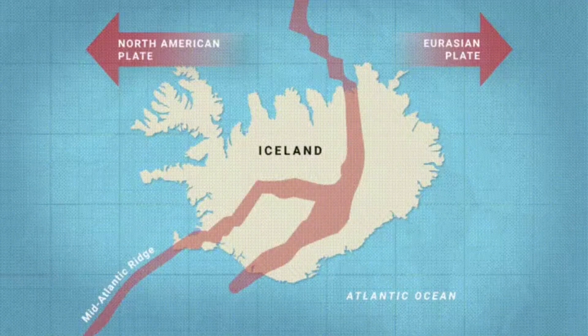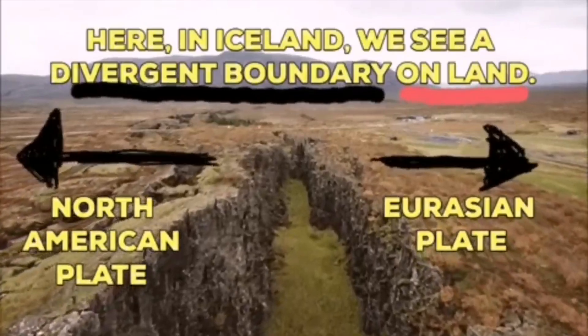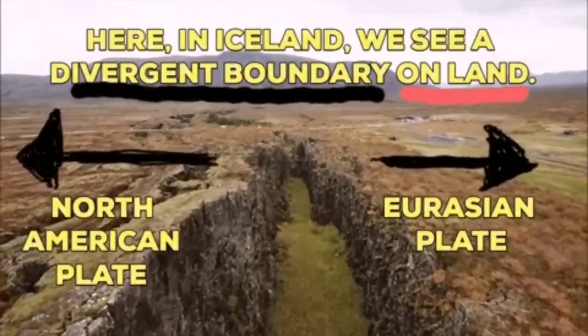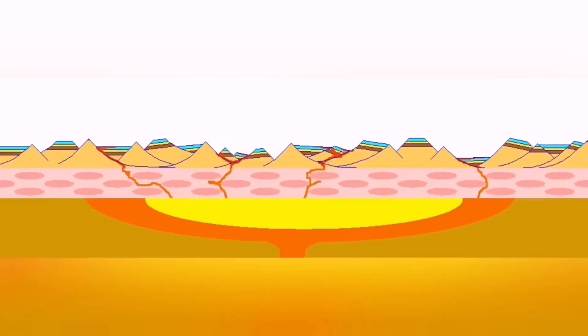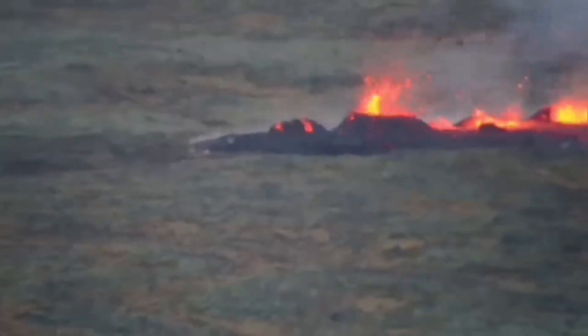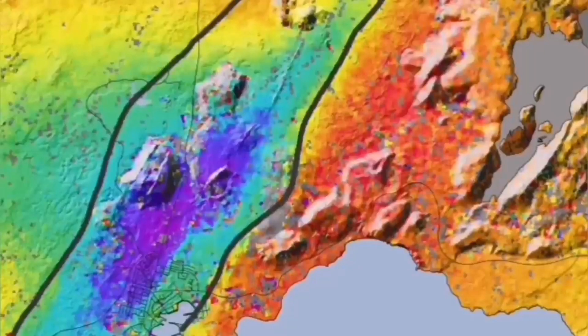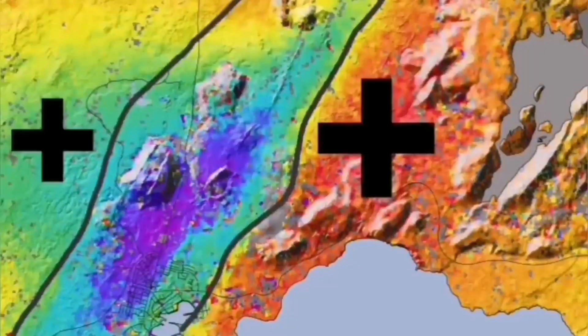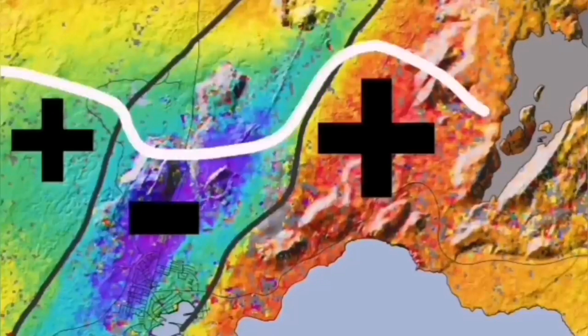Such a thing happens in Iceland, on the land we can see it - Eurasian plate and North American plate. Through these grabens, this is the hollow that you see in the middle, are separating. And through them, the magma forms and rises and creates lava. Eruption of the volcano, this is what we call it.